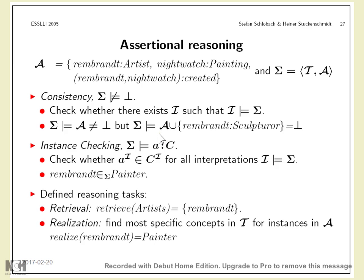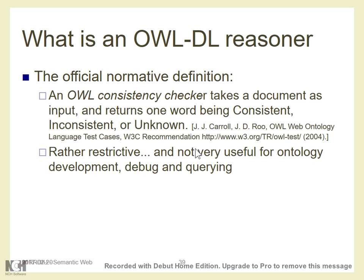Description logic doesn't support more than these four main possibilities. The task is always creating the right class definition. If we only work with the standard classes that are part of the domain description, the kind of information the reasoner will give is quite limited.